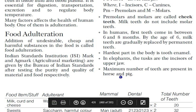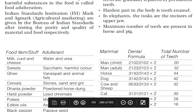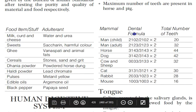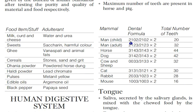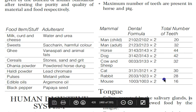Maximum number of teeth are present in horses and pigs. The human dental formula is 2:1:2:3 / 2:1:2:3 × 2 = 32 teeth total (2 incisors, 1 canine, 2 premolars, 3 molars per half jaw). Horse has 44, dog has 42, cows and sheep have 32, cat has 30, rabbit has 28, mouse has 16.